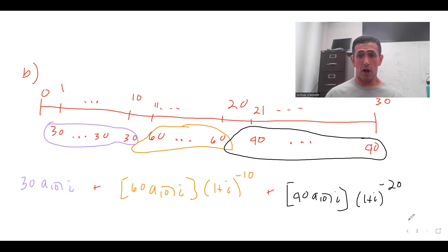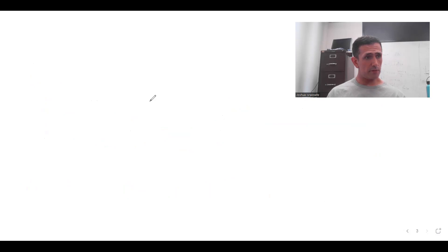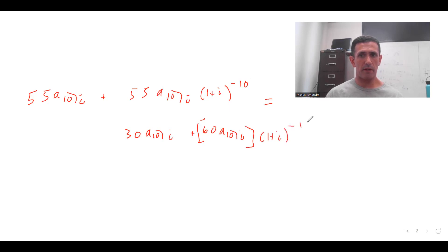These are the present value of these two annuities immediate. So we set them to be equal. So 55 A_10,i plus 55 A_10,i (1 plus i) to the minus 10 equals 30 A_10,i plus 60... So I should say the homework is going to be like this, except you're going to take the accumulated value instead of present value. But same, like, same concept, essentially.